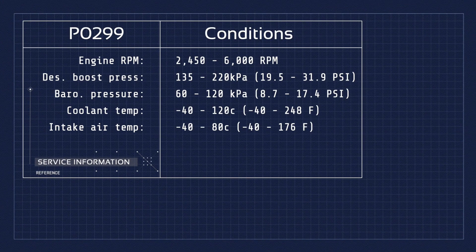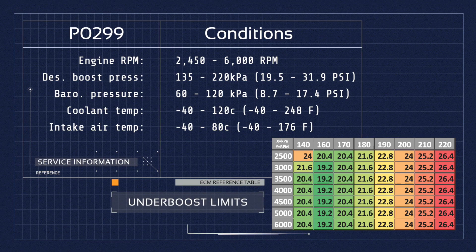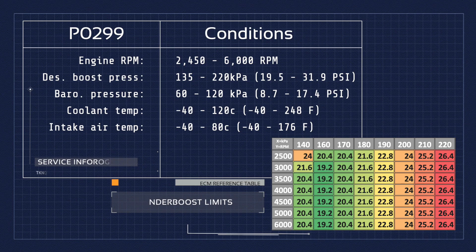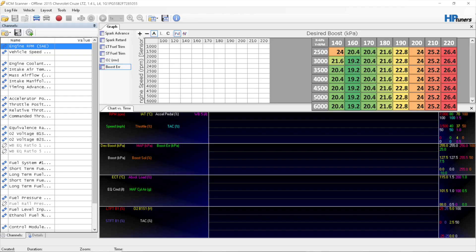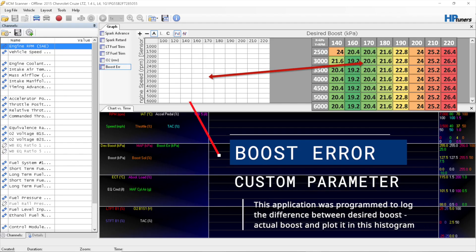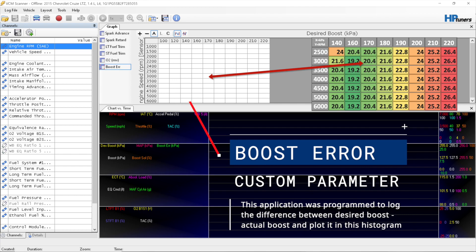According to service information for this vehicle, the ECM monitors for underboost during the following conditions. The diagnostic system is comparing the desired boost versus the actual boost and is looking to flag the fault if the difference exceeds any of these values for longer than two and a half seconds. The scan tool I'm using here allows me to create a histogram table that matches the thresholds table found within the ECM, which I've found to be very helpful.